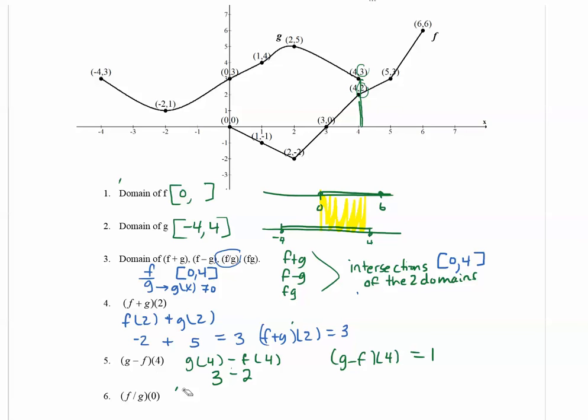f divided by g of 0. So this can be rewritten as f of 0 divided by g of 0. Okay, so f of 0 means go to 0, and you want to hit the f function.